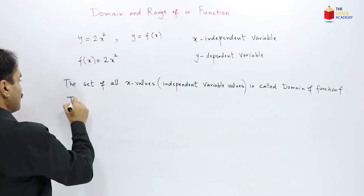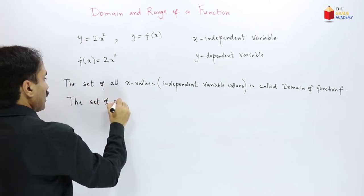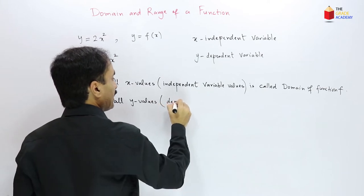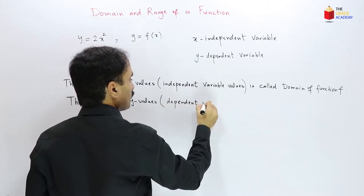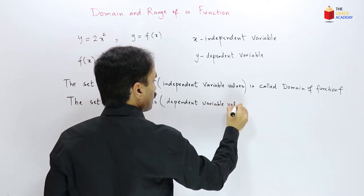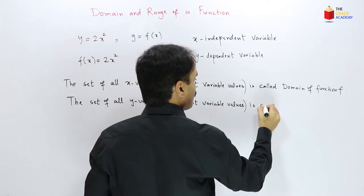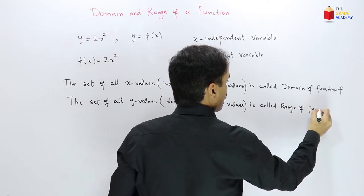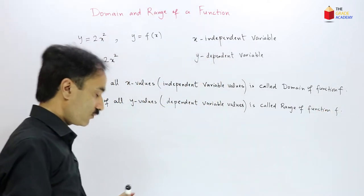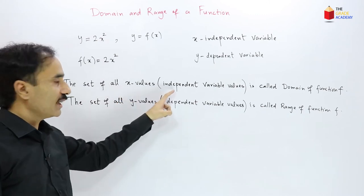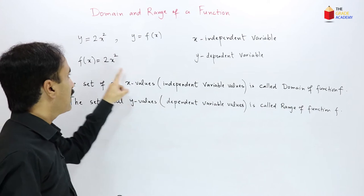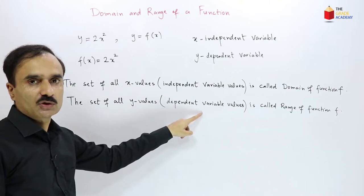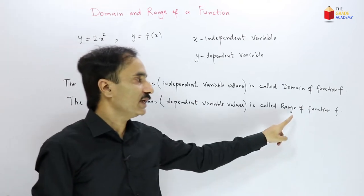Similarly, the set of all y values or dependent variable values is called the range of function f. So domain is the set of all x values — the set of all independent variable values. And the set of all y values — the set of all dependent variable values — is the range.